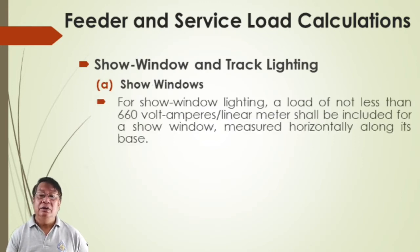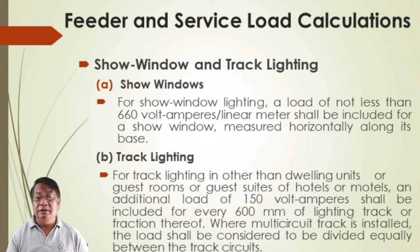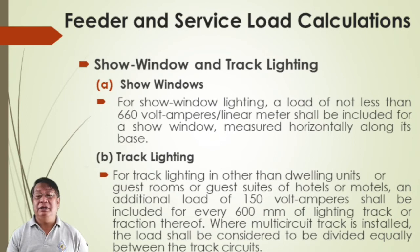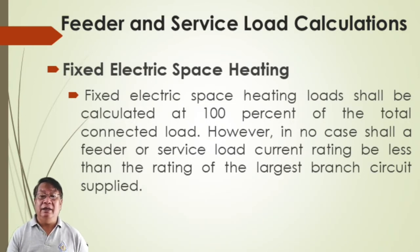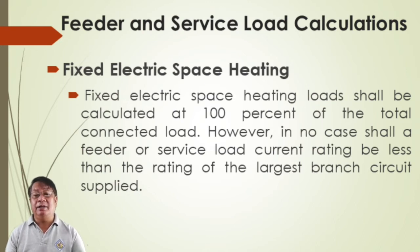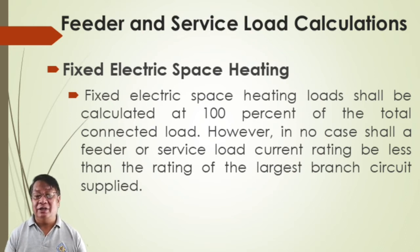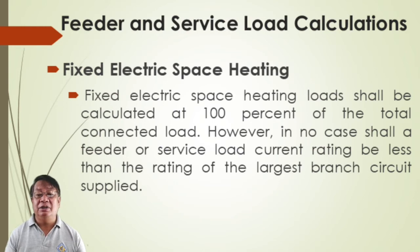For track lighting other than dwelling units, an additional load of 150 volt-amperes shall be included for every 600 volt-amperes. Fixed electric space heating load shall be calculated at 100% of the total connected load — there is no demand factor applied. 100% should be considered for the feeder or service load for electric heating.